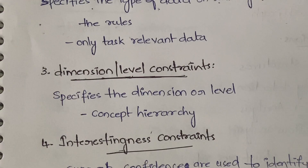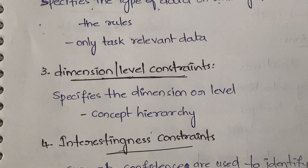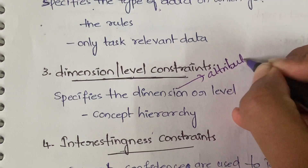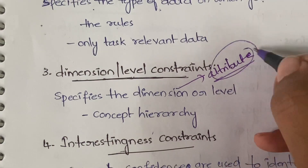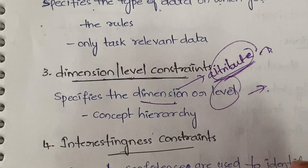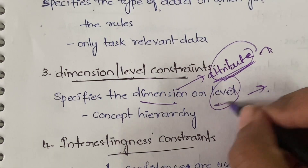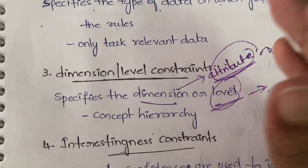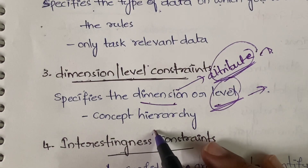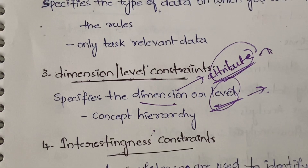The third is dimension or level constraints. The name itself says it — it will specify the dimension or the level at which you want to generate the association rules. Each attribute is denoted as a dimension, so in which dimension — that is, in which attribute — you want to generate the rules, and at what level of hierarchy or abstraction you want to generate the rules. That is what dimension or level constraints provide.